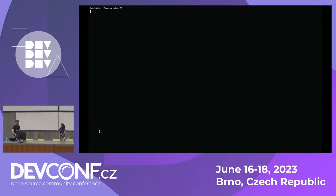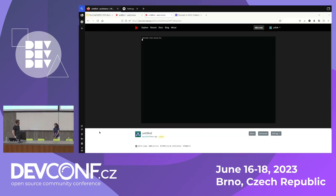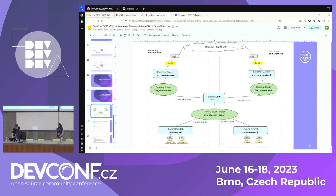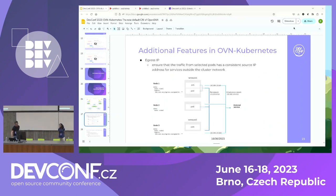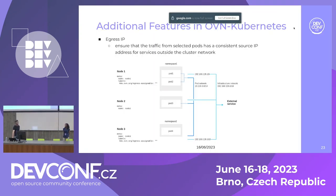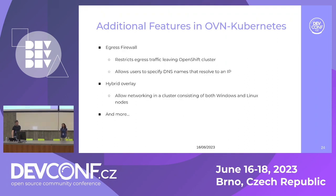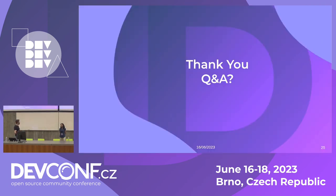And that concludes the demo. We do have some additional features in OVN-K but unfortunately don't have time to cover them. You can check them out on the slides or in our OpenShift or OVN-K documentation. Thank you all — do you have any questions?